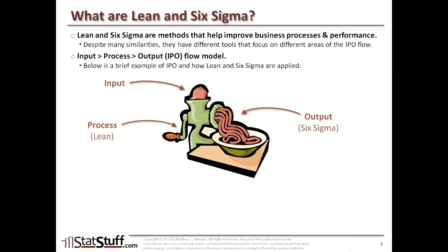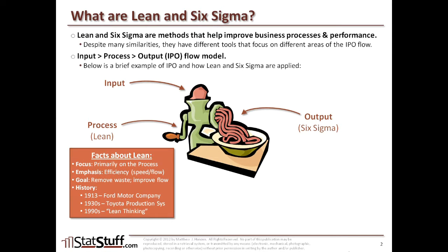Now let's go into a little more depth of how Lean and Six Sigma can be applied in this illustration. We'll first focus on the process, which is really where Lean tends to be focused. It focuses on the efficiency of the process itself — specifically by looking at and improving the speed or the flow of those inputs through the process. The intent is to identify and remove any waste within the process, improving the overall flow. Historically, it really wasn't until about the 1990s that Lean became a lot more popular across many businesses.